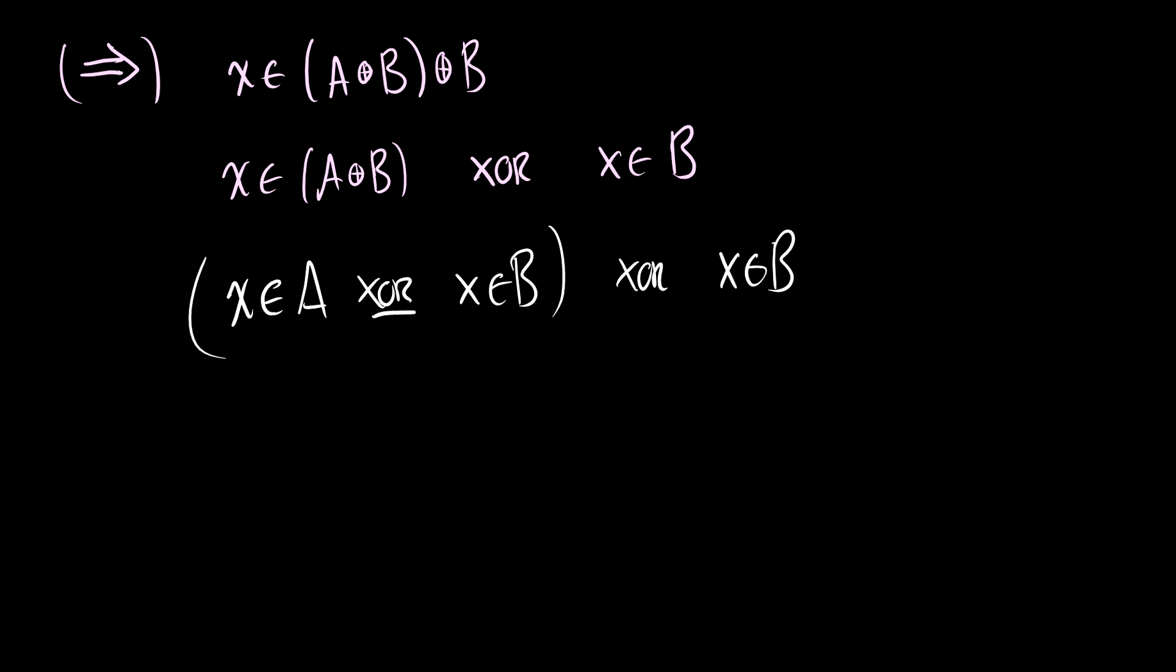So let's assume that x is an element of B. Okay, so if x is an element of B, then this says that x is not going to be an element of A. And more importantly, x is not going to be an element of B.